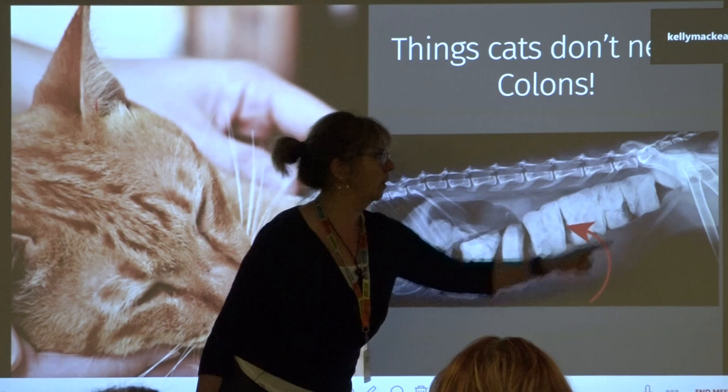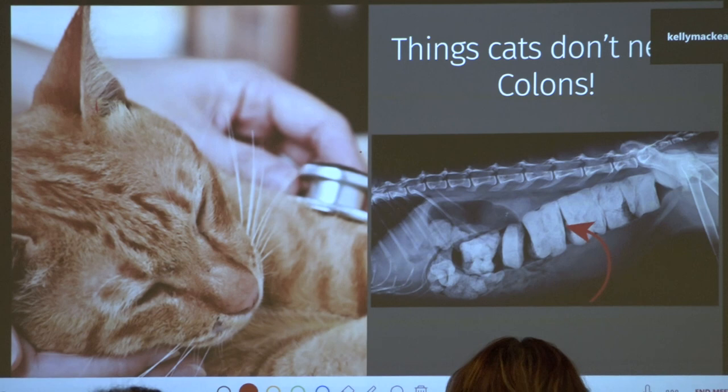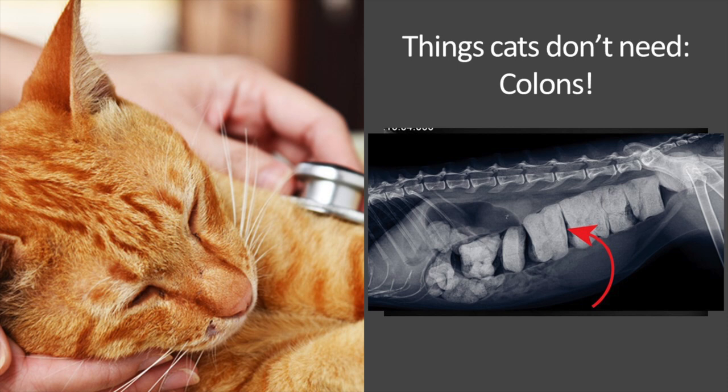This is what a cat with megacolon looks like - the entire colon with giant pieces of poop. Cats absolutely do not need their colons. You take out the entire colon, they don't get colostomy bags - as long as you preserve the ileocecal junction where small intestine meets large intestine, you hook it to the rectum and they are good to go. They don't have diarrhea, they produce normal poop. Nobody understands why - you cannot do this to a person or a dog.